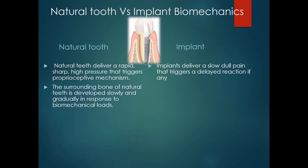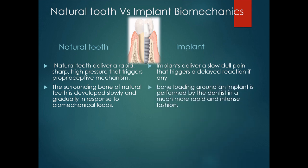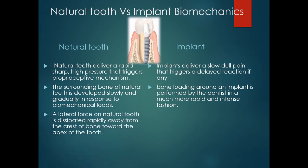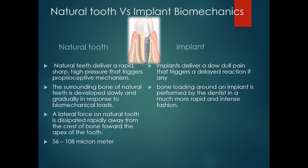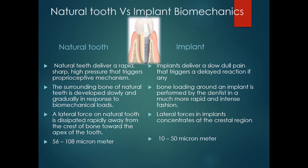The surrounding bone of a natural tooth develops slowly and gradually in response to biomechanical loads, whereas in the case of an implant, bone formation is performed by the dentist in a much more rapid and intense fashion. Regarding lateral force: when a lateral force acts on a natural tooth, it is dissipated rapidly away from the crest of bone towards the apex, with the fulcrum at the apical third, reducing crestal loads, and produces a rapid primary movement of 56 to 108 micrometers. Whereas in the case of an implant, lateral force is concentrated at the crestal region because there is no primary rapid movement; the implant exhibits only a secondary movement of 10 to 50 micrometers, causing stress concentration at the crestal region.